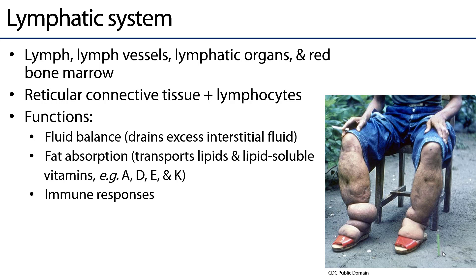The lymphatic system consists of lymph, lymph vessels, lymphatic organs, and red bone marrow. Lymph can be thought of as blood plasma. The tissue that comprises much of lymphatic vessels and organs is reticular connective tissue — it's a dense connective tissue rich with fibroblasts, and there are also a healthy amount of lymphocytes embedded throughout this tissue.